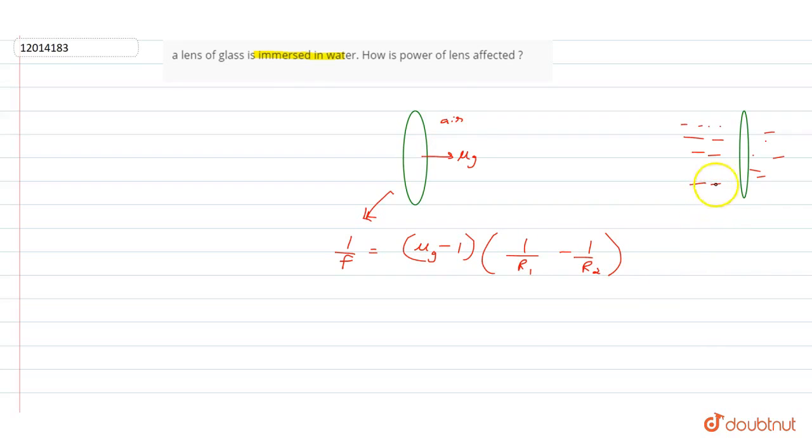So in this condition, mu of water is outside, mu of glass inside. And what is mu of glass? So we will write this: 1 by f is equal to mu of glass, that is mu2 by mu1, that is mu of water, minus 1, times 1 by r1 minus 1 by r2.